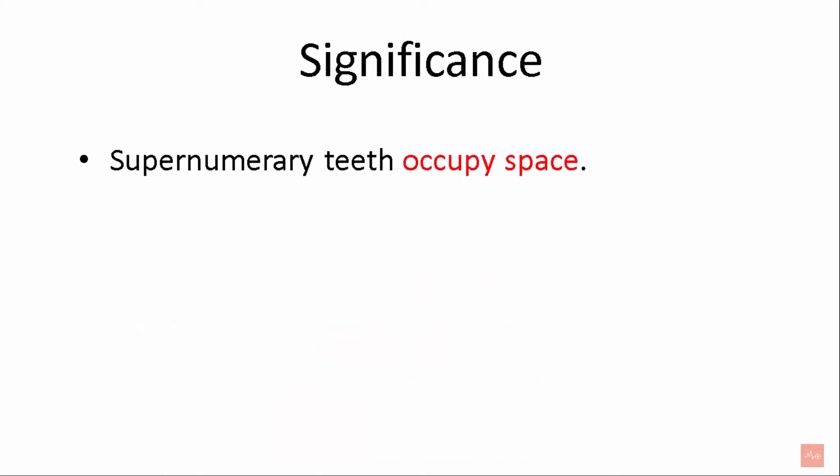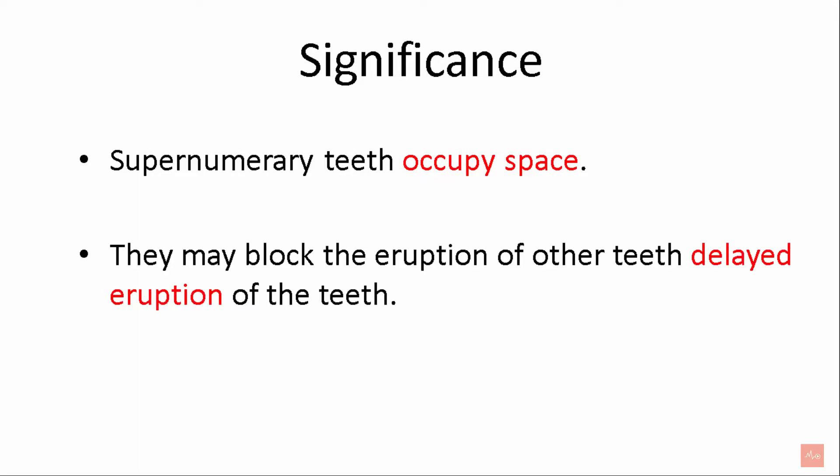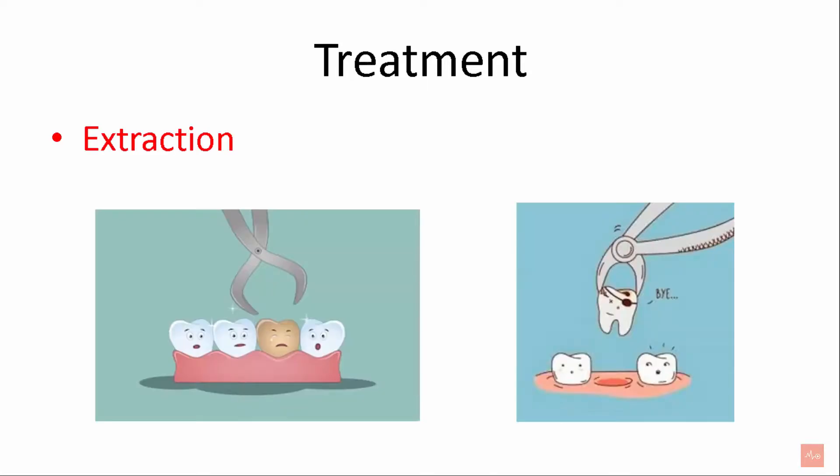Now let's see the significance of supernumerary teeth. These occupy space. They may block the eruption of other teeth and also result in delayed eruption. They can also cause malalignment of the dentition. The treatment for this is extraction.